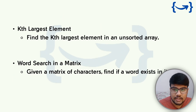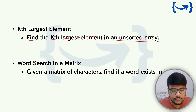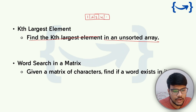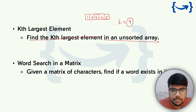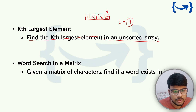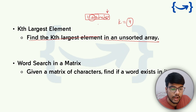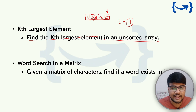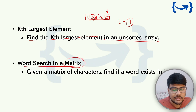Find the kth largest element in an unsorted array. For example, given an array of five elements, if asked for the fourth largest, sort descending and pick the fourth element — the answer would be two in that example. Think about what approach you'd use and share it in the comments. Word search in a matrix is one of the rarest problems — you can expect such advanced DSA problems if your resume claims 400-500 LeetCode problems solved.